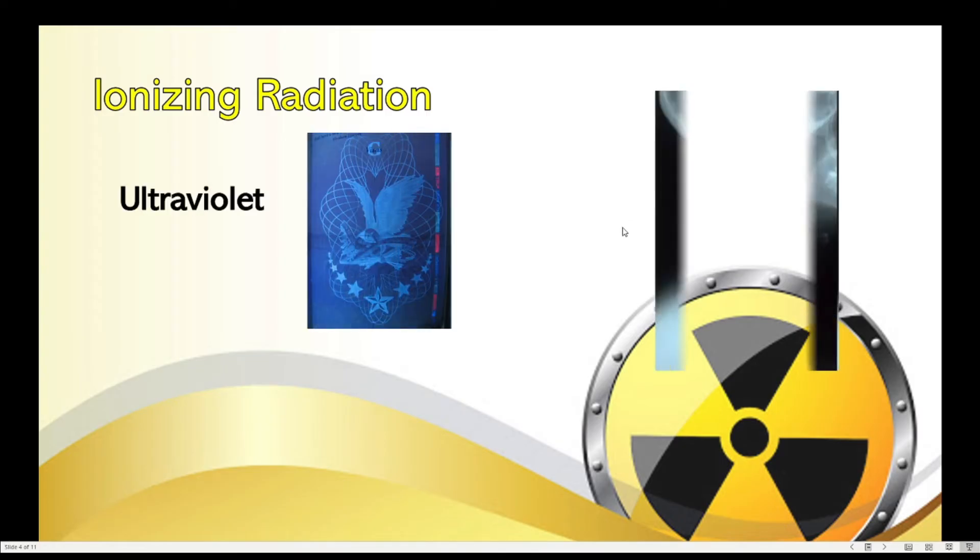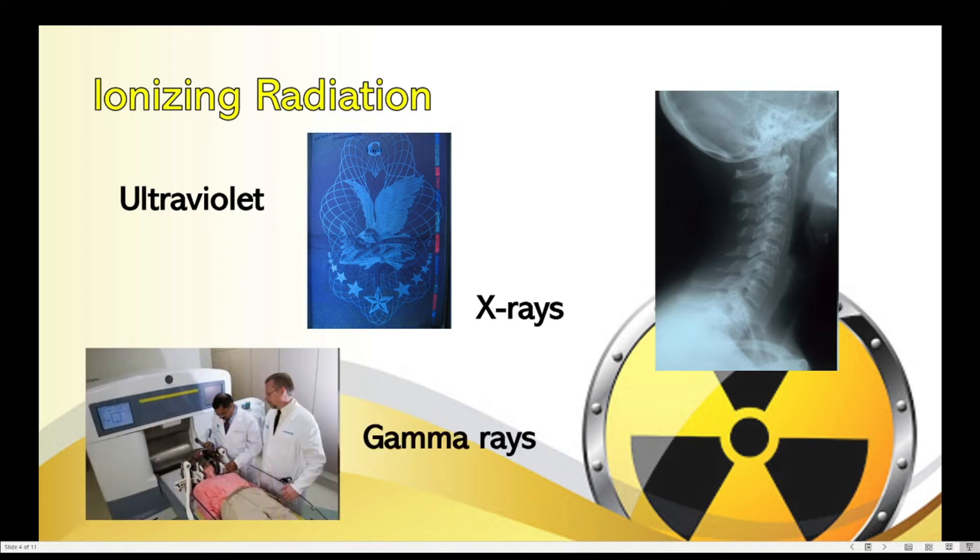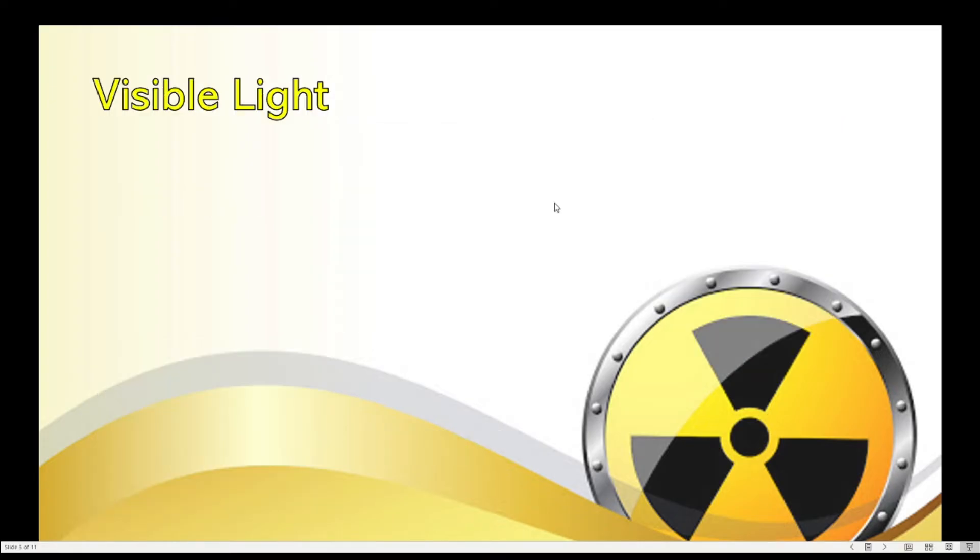Okay, so we said a while ago that these are examples of ionizing radiation. And these pictures show the different applications of each type of radiation or electromagnetic waves. Let's start with visible light.